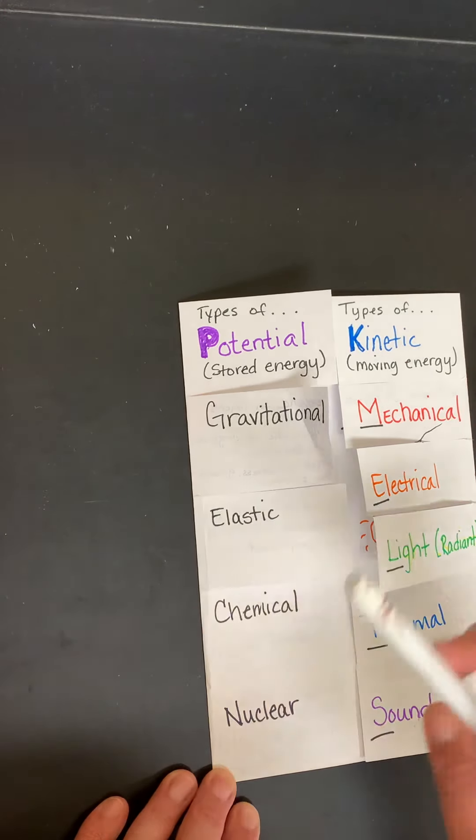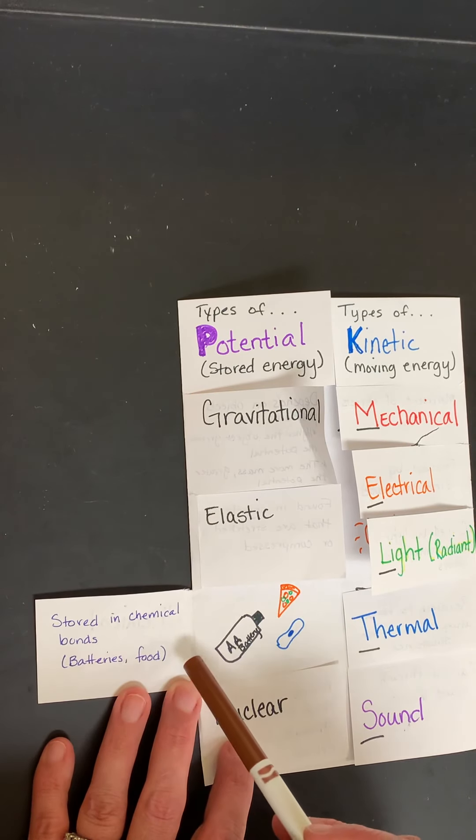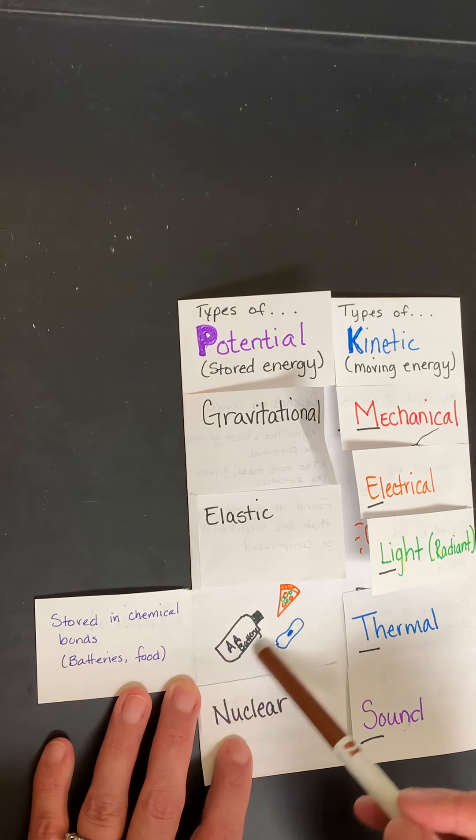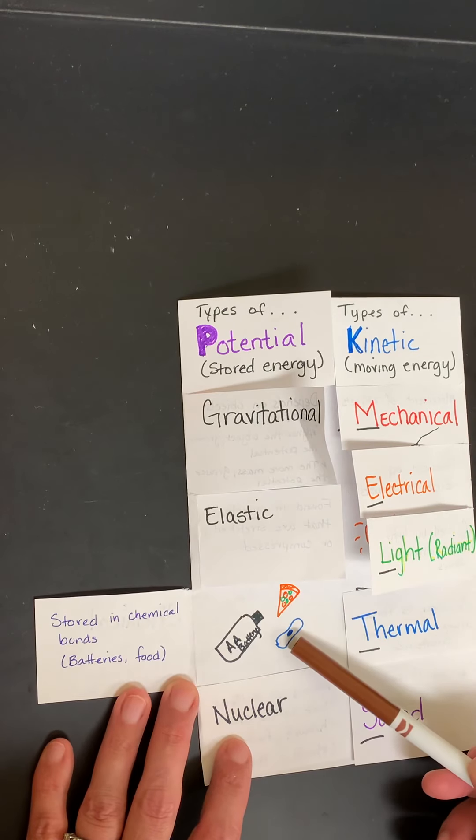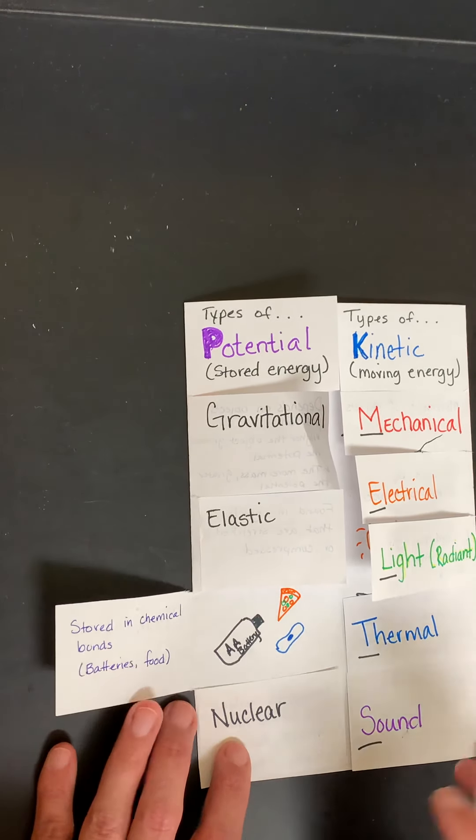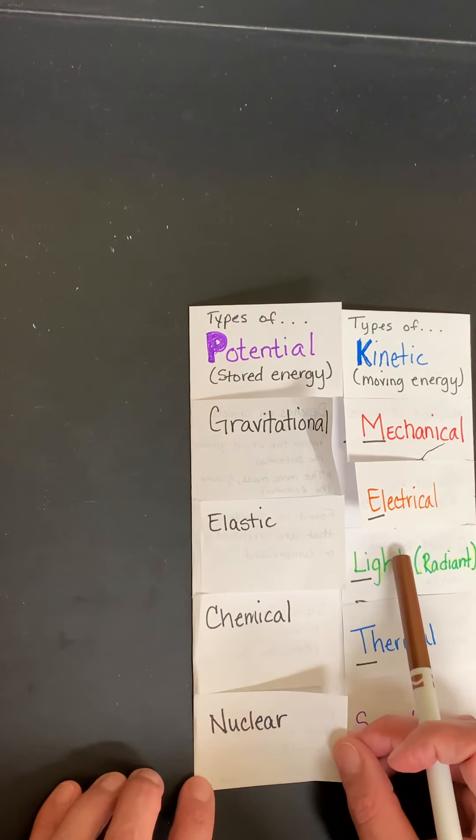The third one is chemical potential energy. This is stored in the chemical bonds of atoms. So you're typically going to find your chemical potential energy in batteries, food, the food that we eat, and then the cells of our body because they're going to store that energy until we use it.